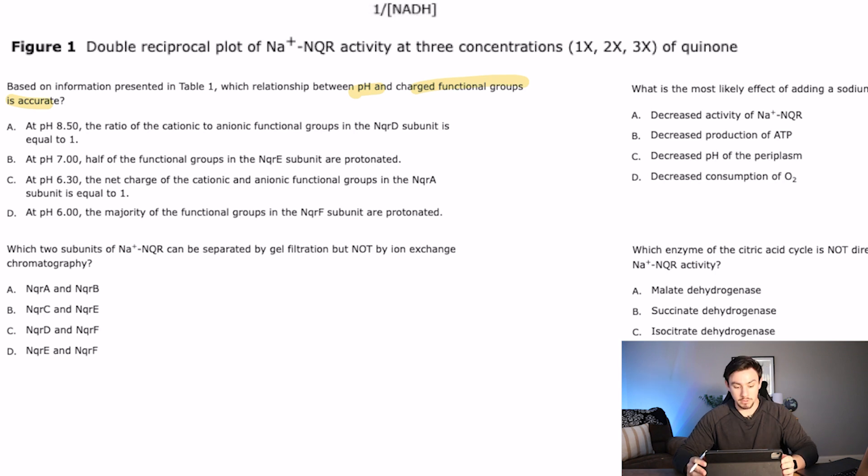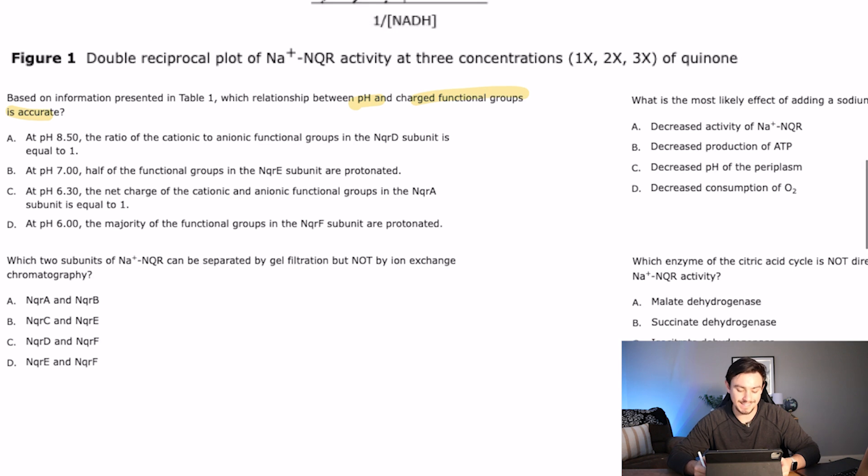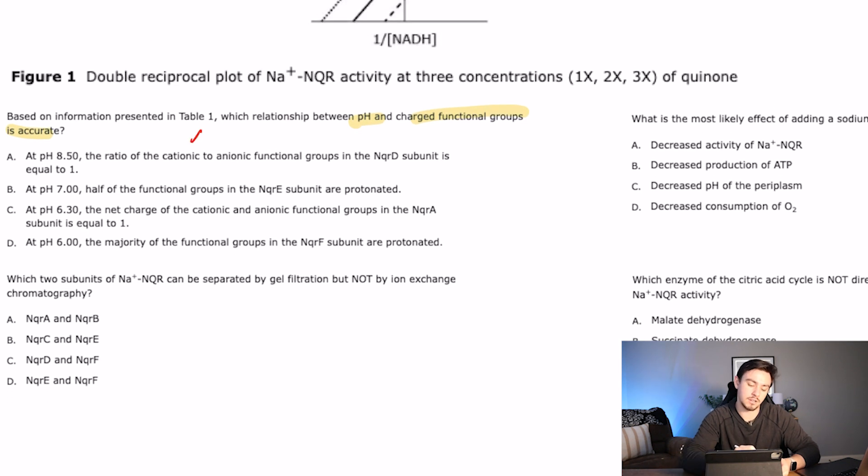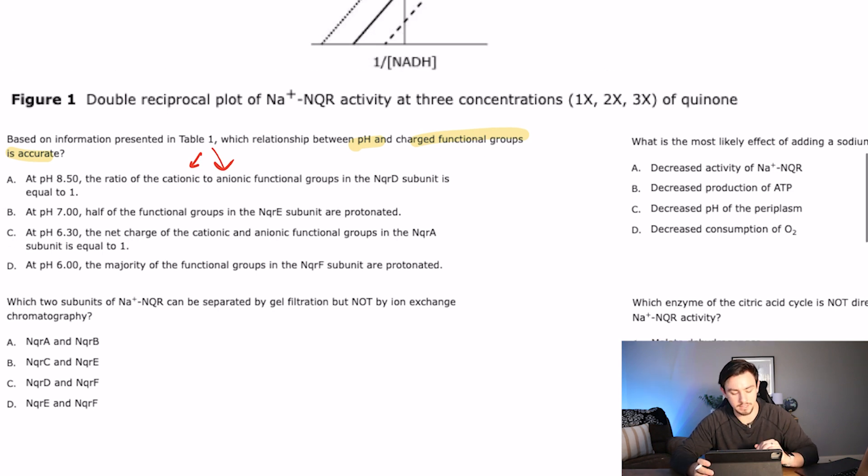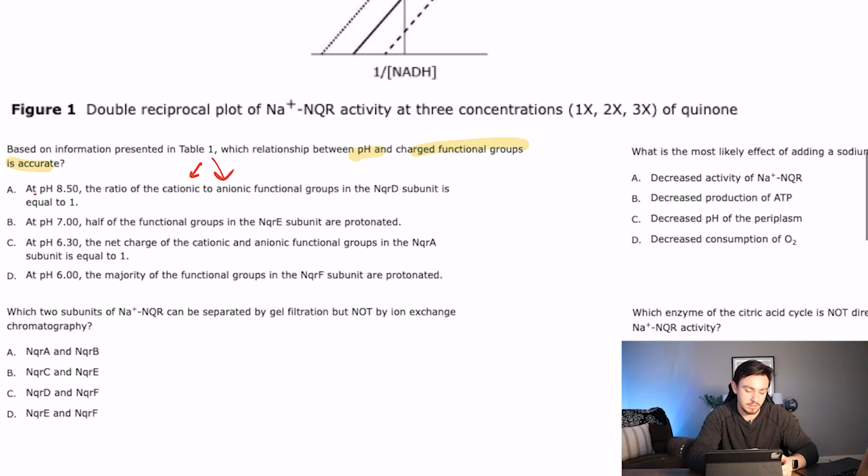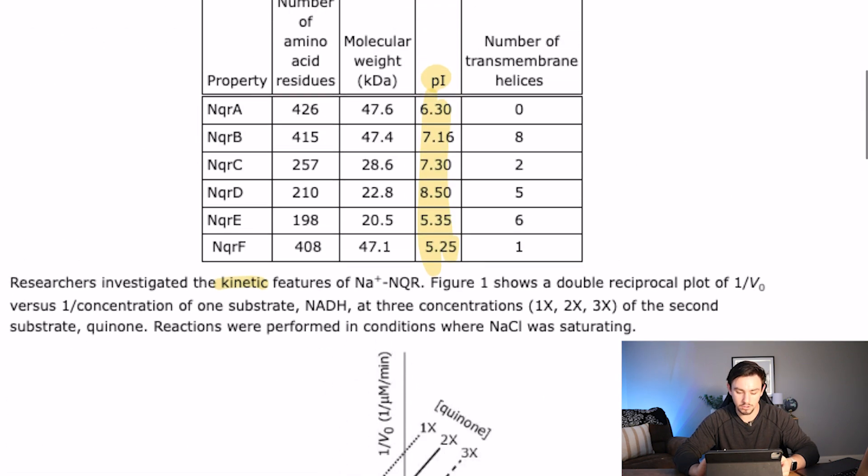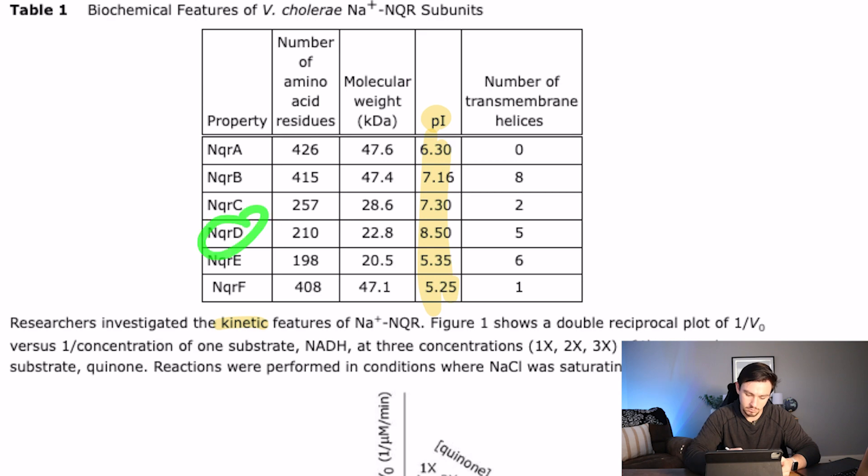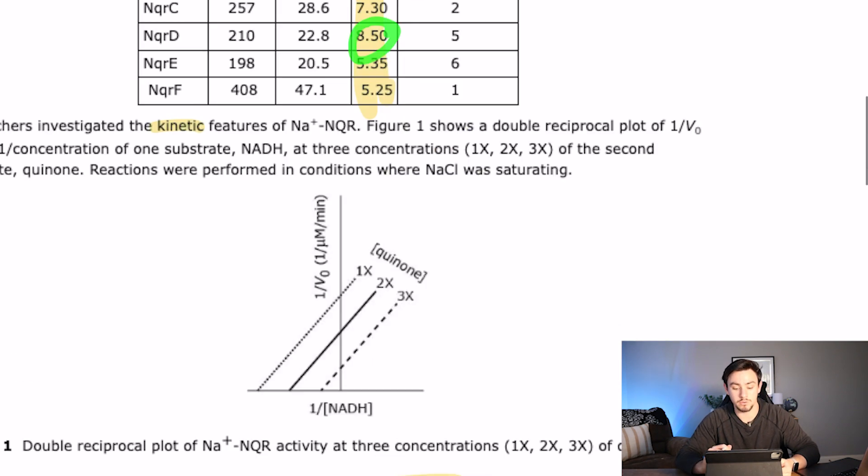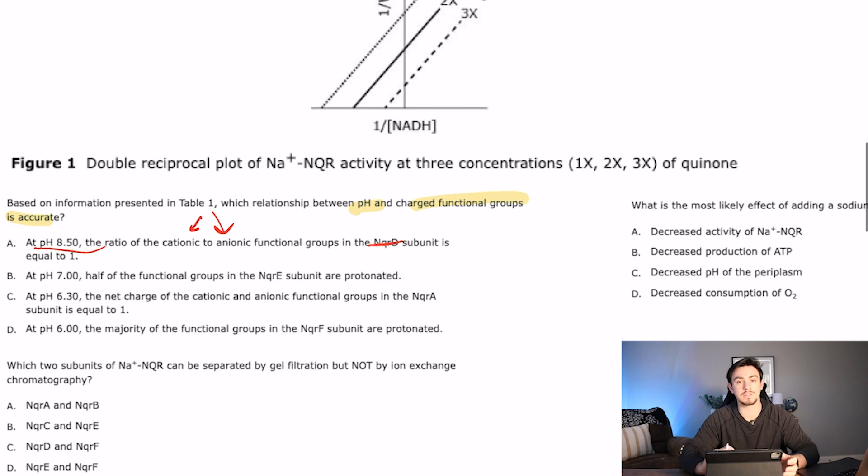And remember the isoelectric point is the point to where like 50% of a molecule is deprotonated and 50% is protonated. So answer with A says at pH 8.5, the ratio of cationic, which would be protonated to anionic, which could possibly be deprotonated functional groups in the NQRD subunit is equal to one. Now, not all cations or anions are protonated or deprotonated. So don't take what I said to the bank. But regardless, they're saying at pH 8.5, this subunit is equal to one. So protonated to deprotonated is equal to one, which would be a 50-50 ratio. So NQRD, that is this one right here. What is the PI? 8.5. So that kind of makes sense, right? At 8.5, I would have 50% deprotonated to 50% protonated, which would be a ratio of one. So I like answer choice A.